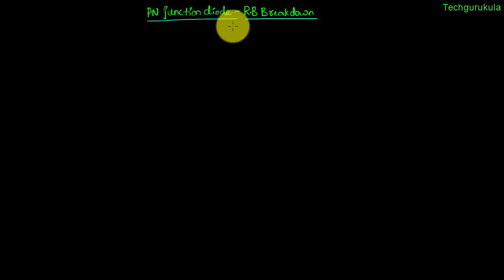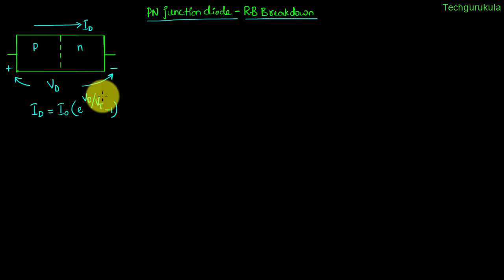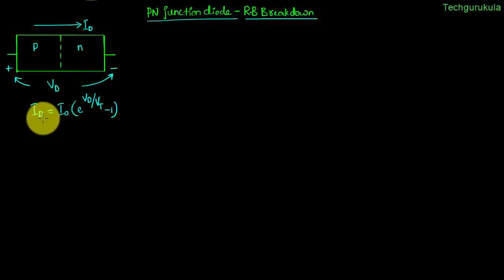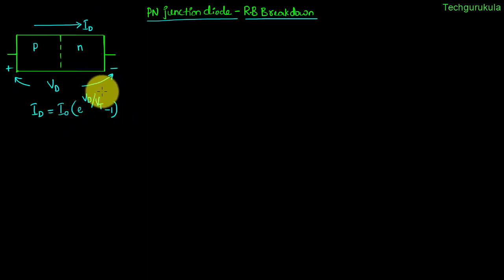In this video, we're going to see reverse bias breakdown of a P-N junction diode. If you take a P-N junction diode, the current flowing through it, I_D, is given by this equation, where it is a function of the potential applied across the P-N junction.